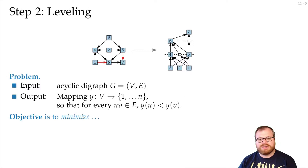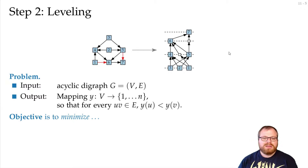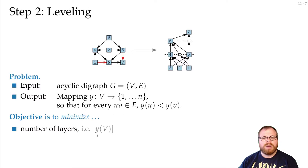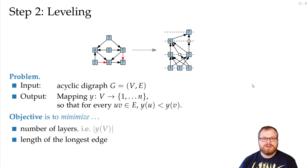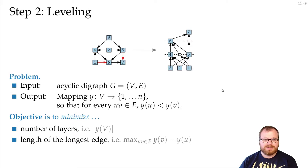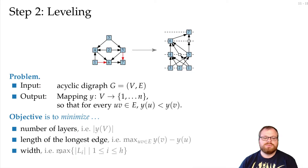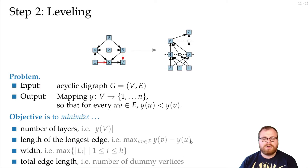We place dummy vertices whenever we cross a layer, which will be needed in further steps. There are many things we can optimize: the number of layers (the maximum y-coordinate), the length of the longest edge (the maximum over all edges of the target's y-coordinate minus the source's), the width (the maximum number of vertices on a single layer), the total edge length (summing all differences), or simply the number of dummy vertices created.